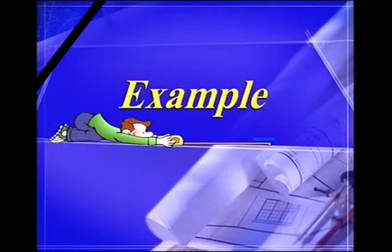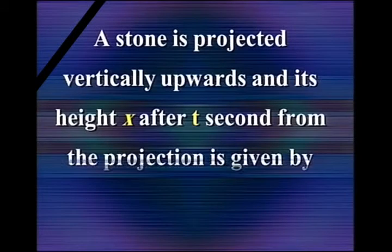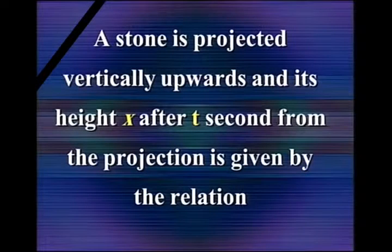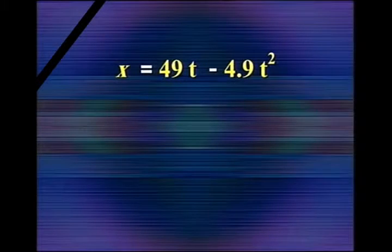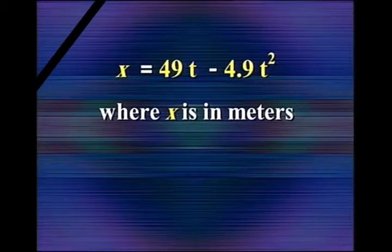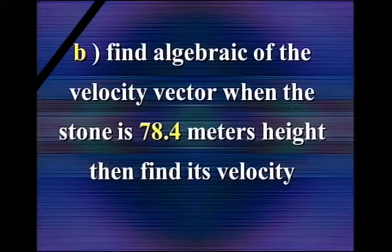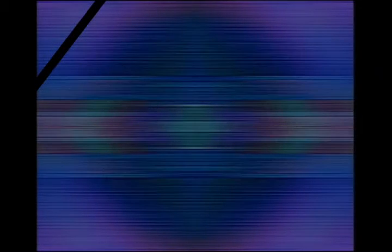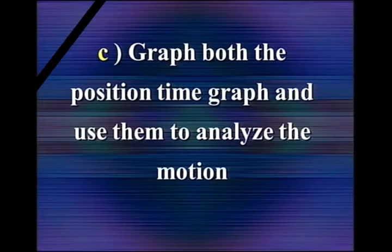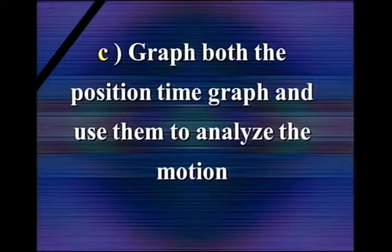Dear students, we now move to an example. A stone is projected vertically upwards and its height X after T seconds from the projection is given by X equals 49T minus 4.9T squared, where X is in meters. Find: (A) the maximum height the projected body can reach; (B) the algebraic measure of the velocity vector when the stone is 78.4 meters high, then find its velocity; (C) graph both position-time and velocity-time graphs and use them to analyze the motion.